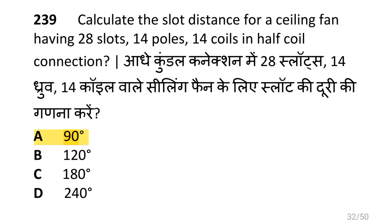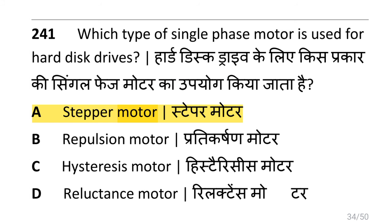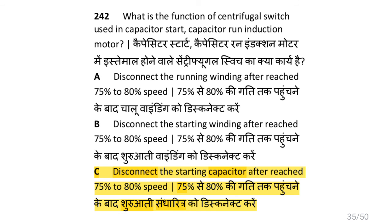Calculate the slot distance for a ceiling fan having 28 slots, 14 poles, and 14 coils in a half coil connection. That is 90 degrees. What is the application of shaded pole motor? That is hair dryer. Which type of single phase motor is used for hard disk drives? That is taper motor. What is the function of centrifugal switch used in capacitor start, capacitor run induction motor? That is to disconnect the starting capacitor after reaching 75 to 80% speed.